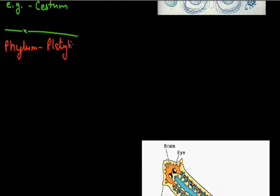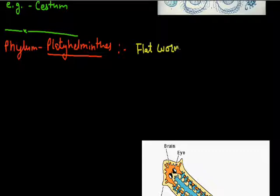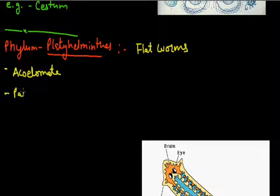These animals are known as flatworms because they are dorsal-ventrally flattened. In this group, these animals are also acoelomate, meaning they have no body cavity in their structure.